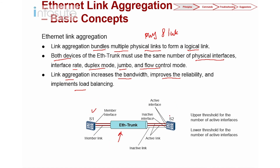The main purpose of link aggregation is to increase bandwidth, improve reliability, and implement load balancing. For example, with Switch 1 and Switch 2 connected by three 1-gigabit interfaces bundled together, you get up to 3 gigabits of bandwidth. We configure this as an Ether trunk — bundling three physical links into one logical link. With LACP, we can also set an upper threshold for the number of active interfaces.